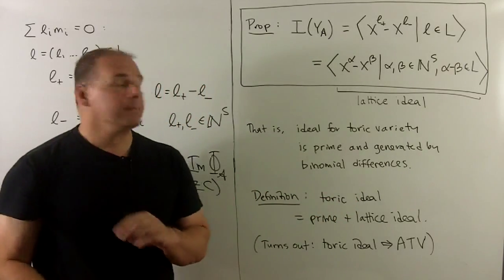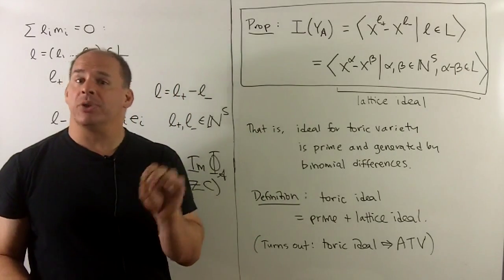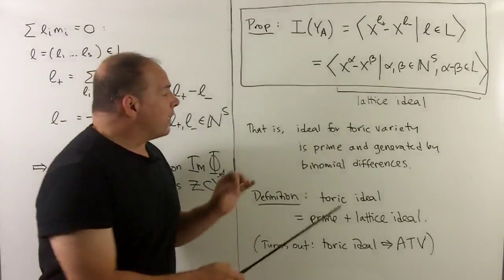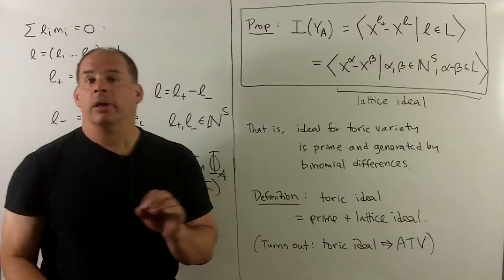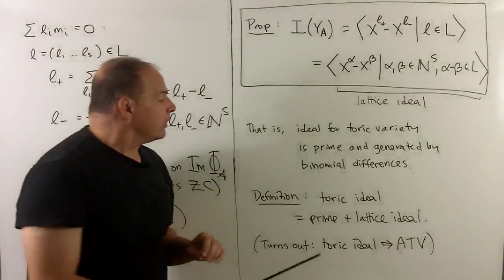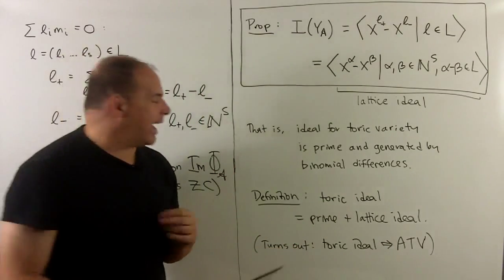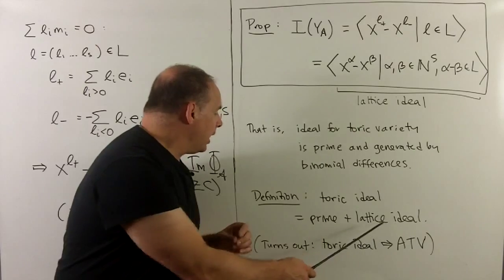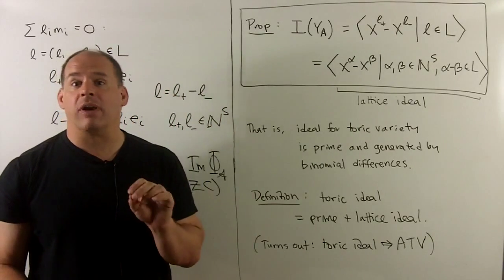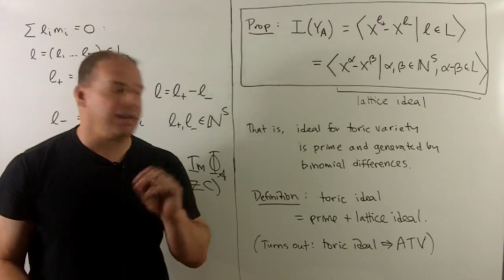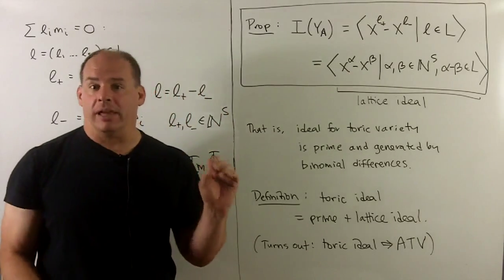The ideal for a toric variety is irreducible — so the ideals are prime — and generated by binomial differences. Another definition: a toric ideal is an ideal that is prime and a lattice ideal. It turns out this gives a third way to characterize affine toric varieties: these are just the varieties that go with toric ideals.